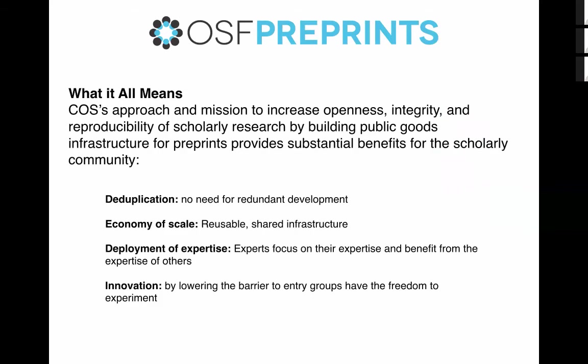The Center for Open Science's approach and mission to increase openness, integrity, and reproducibility of scholarly research by building public goods like preprints infrastructure provides substantial benefits for the scholarly community. Number one is deduplication: as a modular and open source project, there's no need for redundant development of infrastructure. New capabilities are developed for one use case and instantly benefit the entire community of users — each group doesn't have to build infrastructure from scratch. That also provides an economy of scale, so everything we do is reusable and shared, less expensive to run and maintain, potentially by orders of magnitude.